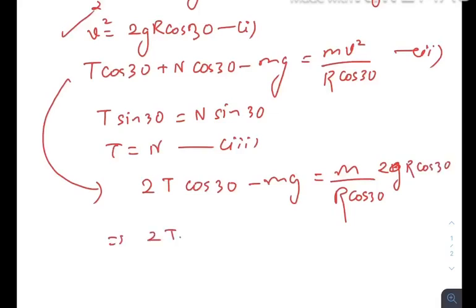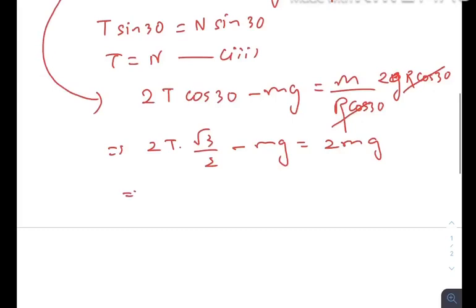That would be 2 T root 3 divided by 2 minus mg equals—R cos 30 gets canceled out—and we get 2 mg. So root 3 times T equals 3 mg, and the tensile force at the bottommost point is equal to root 3 mg.